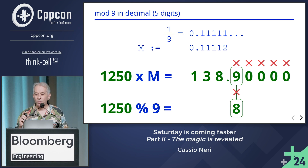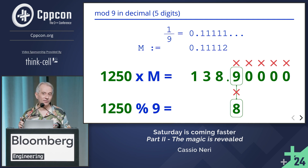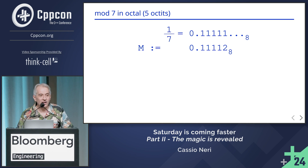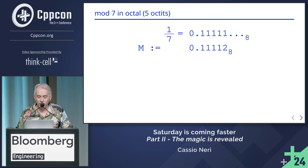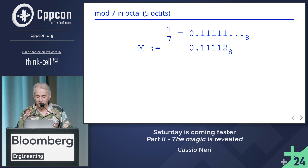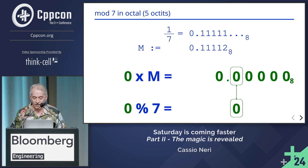The crucial point here is that the divisor nine is one less than the base ten. This suggests that for modulo seven, we should use octal numbers. Here is the same exercise — here is one seventh in octal and an approximation for that. It looks very familiar, doesn't it?